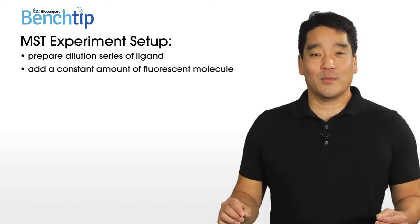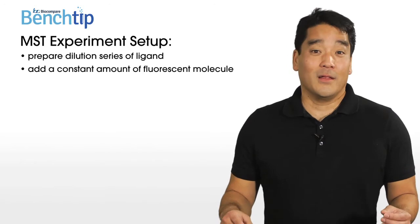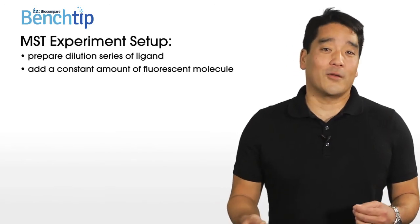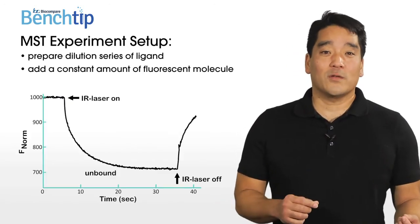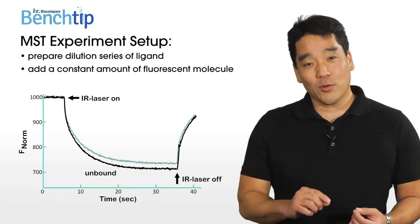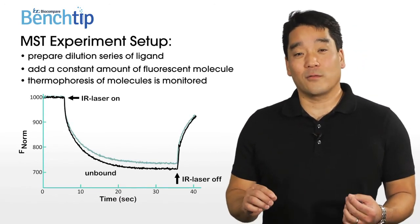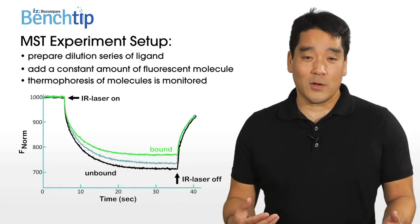So how do you set up an MST experiment? Well, first you prepare a dilution series of your ligand, and you add a constant amount of a fluorescent molecule. The sample is filled into capillaries and loaded into the instrument, and the instrument uses an IR laser to generate a temperature gradient, and the thermophoresis of fluorescent molecules in this gradient is monitored.